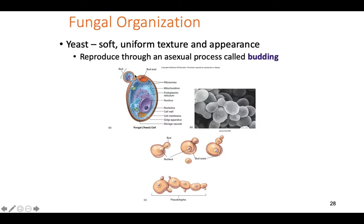The yeast cell is a soft, squishy little ball — all generally little round balls, slightly different shapes and sizes. They reproduce asexually through the process of budding: the nucleus splits and the cell forms a little ball of cytoplasm off to the side. The nucleus splits to form another nucleus in the bud, which keeps growing. The buds will get big enough to pop off and start another single cell. That process is budding.